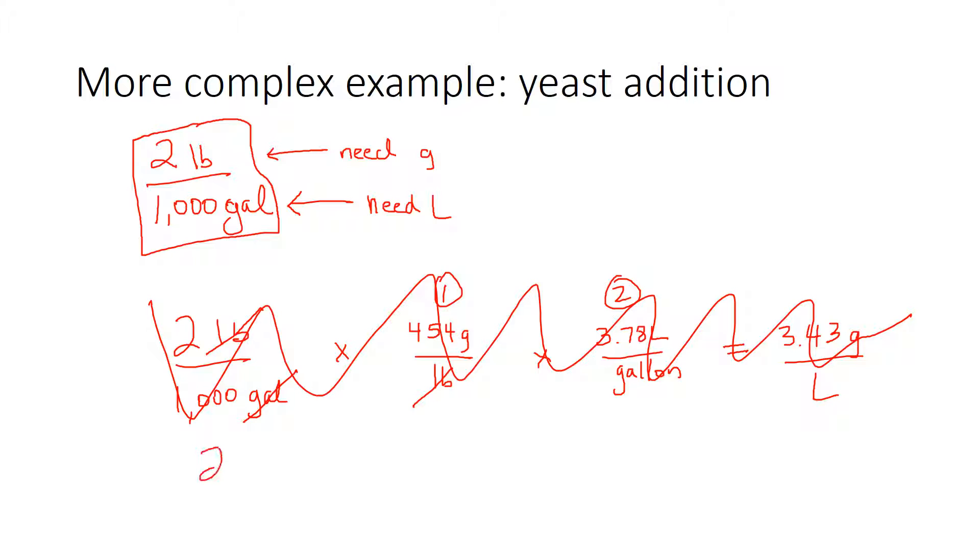Let's do it over. Two pounds per thousand gallons times 454 grams per pound times my second conversion factor, which I need to invert. I need to say one gallon per 3.78 liters. Now do my units cancel?